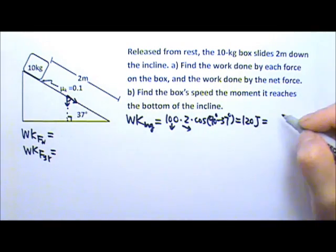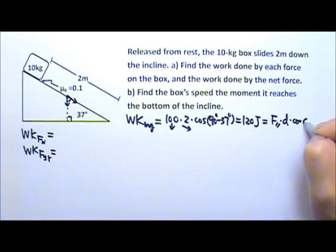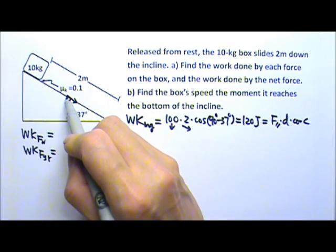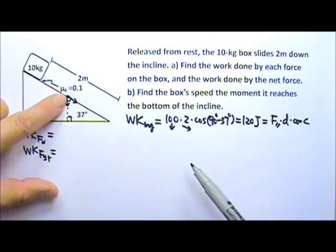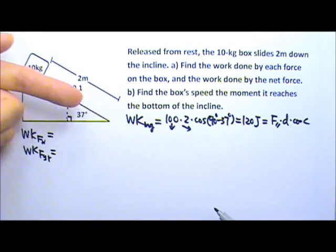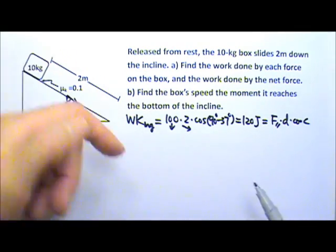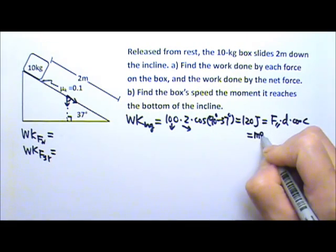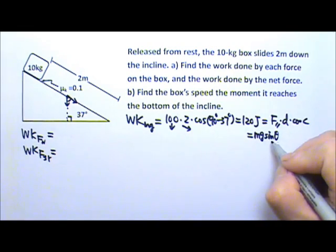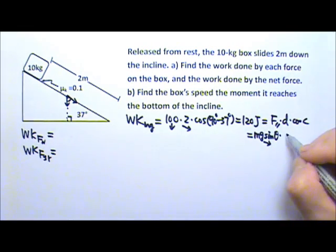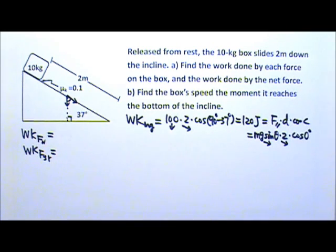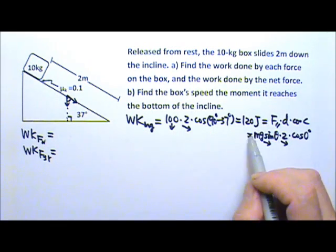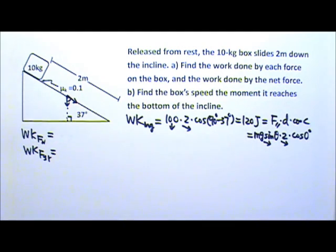Alternatively, we can use the parallel component times D times cosine of the angle between those two. The Mg goes down, and the component parallel to the displacement is Mg sinθ, which goes down the incline. The displacement is 2 m also down the incline, so the angle between them is 0 degrees. Mg sinθ equals 100 times sin 37 degrees, and you get the same 120 joules.